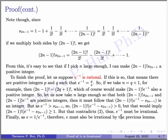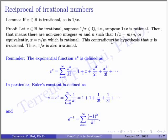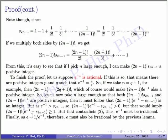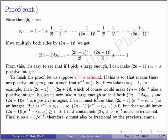Therefore E to the minus 1 is irrational. By the lemma we proved at the start, if E to the minus 1 is irrational, then its reciprocal — which is E — must also be irrational. This proves that E is irrational. I hope this is helpful. Thank you for watching.